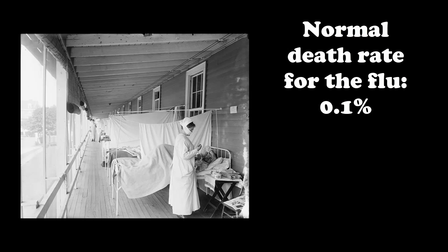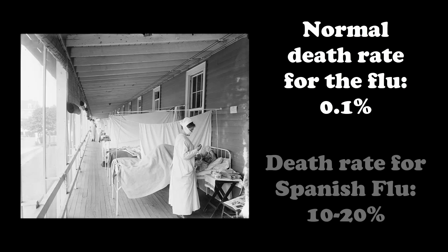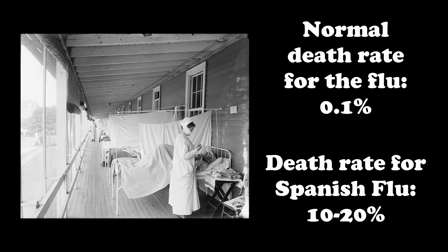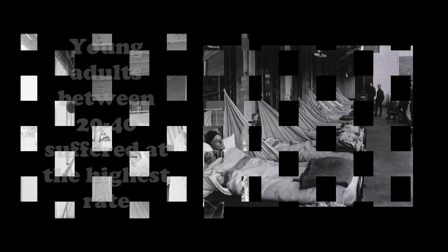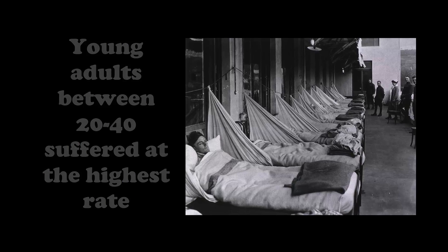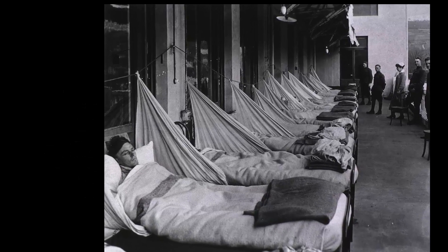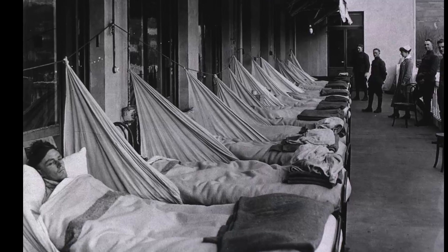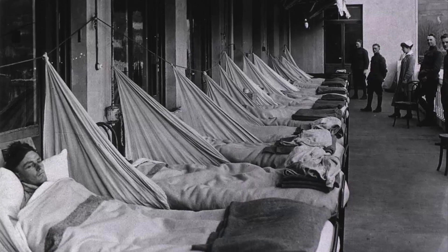Death rates for the flu are generally about 0.1% of those infected. However, with the Spanish flu, somewhere between 10 to 20% of those infected died, either due to the flu itself or from complications that arose from their infection. Strangely enough, young adults ages 20 to 40 were infected and died at the highest rate, which is abnormal compared to most outbreaks of the flu, where infants and the elderly suffer the most.